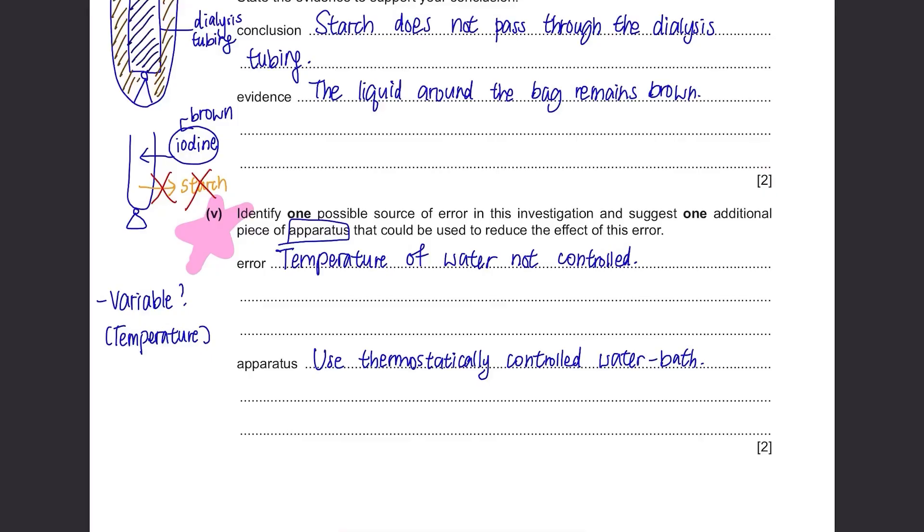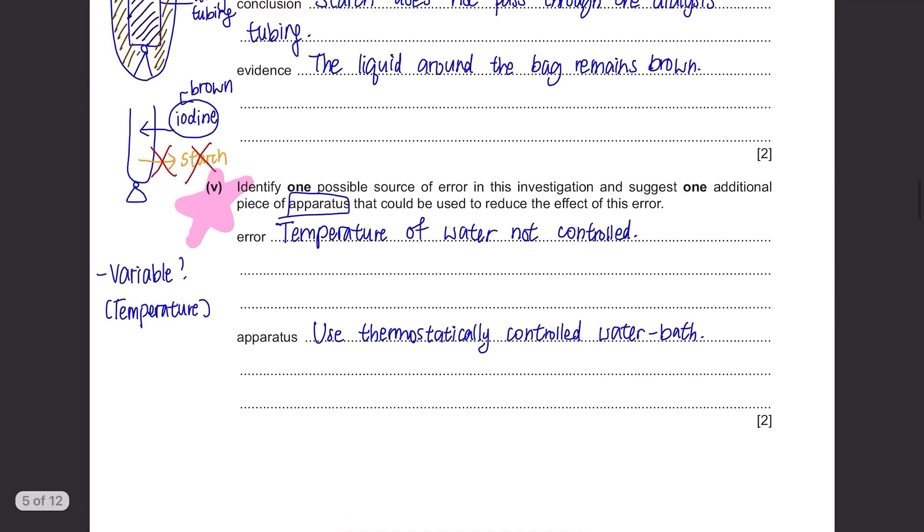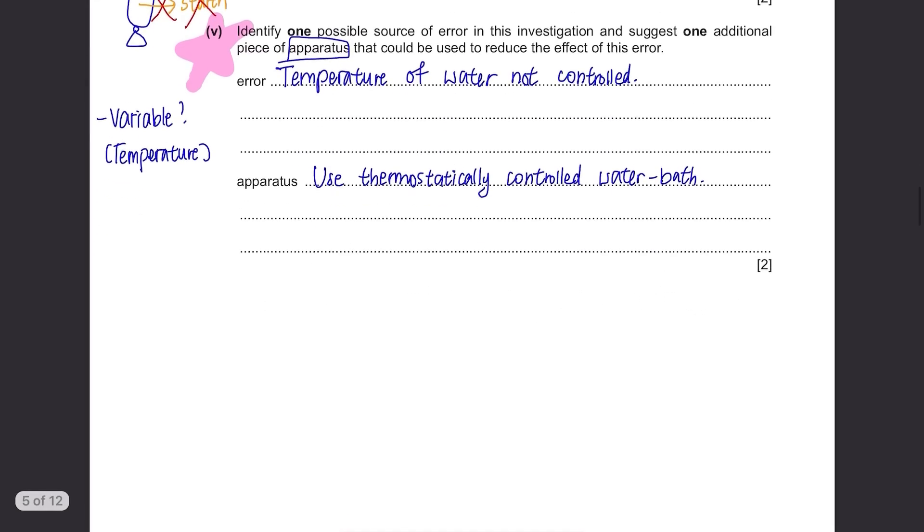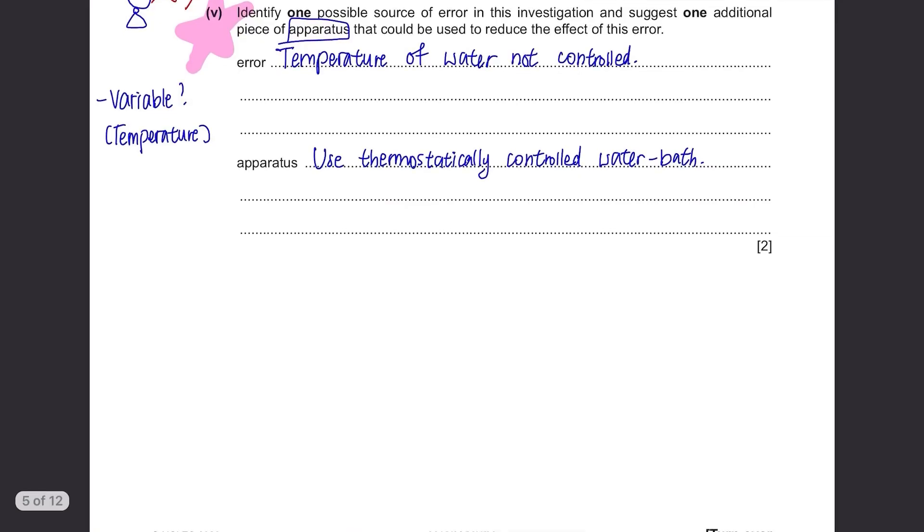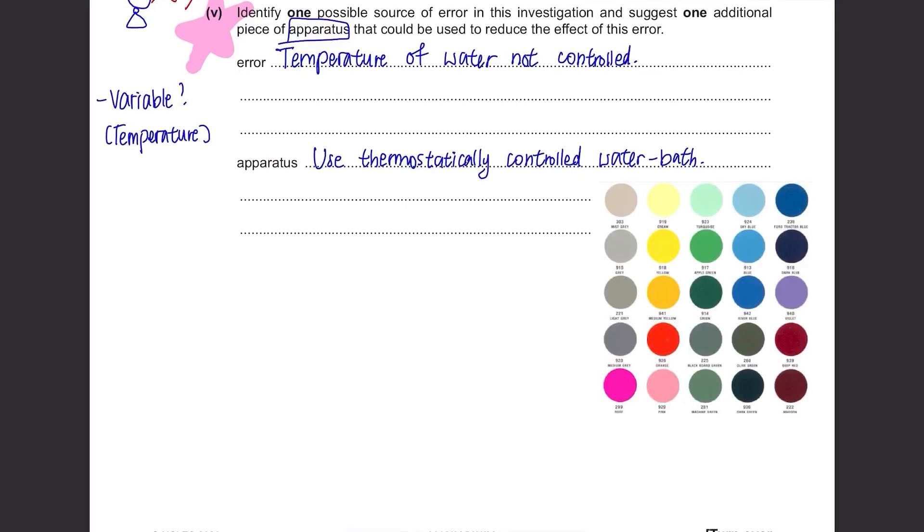Also they said they measured the time taken for the cross to disappear but how we know the exact moment it has disappeared? It's very ambiguous so instead of using that method, it's better to compare with the colour standard and accurately identify the colour change. Another answer can be that the volume of starch put inside the dialysis tubing is not measured. They never mentioned about its specific volume and this is why you need to read the steps carefully. So measure the volume using a measuring cylinder, a burette or a pipette.